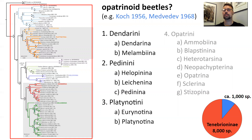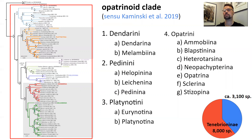Furthermore, when we investigated the available literature, we instantly saw that several authors postulated a close or even sister relation between Opatrini and Pedinoid beetles. This is interesting because Opatrini groups over 2,000 species and 117 genera. We looked into this relationship and informally proposed the opatrinoid clade, and at the same time we fed our little black hole a little bit.